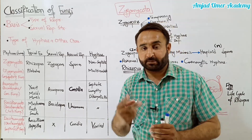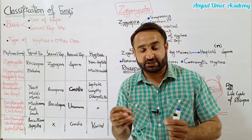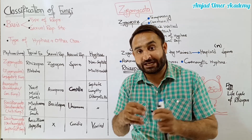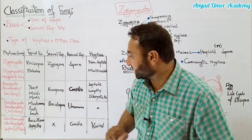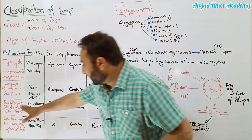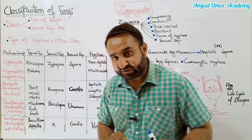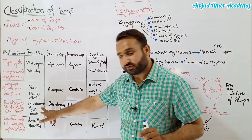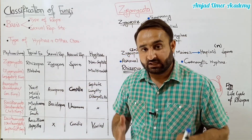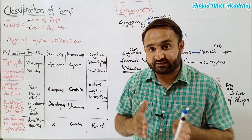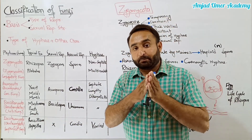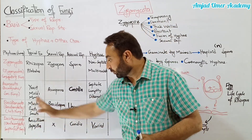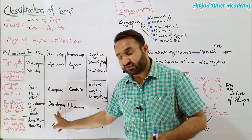Ascomycota mein septate hyphae hoti hain aur lengthy dikaryotic phase hota hai - yani har compartment mein do nuclei hote hain jo alike hote hain, yeh dikaryotic ya heterokaryotic phase kehlata hai. Basidiomycota - jo club fungi hain - mein mushrooms shamil hain, jo edible hote hain, aur notorious pathogens bhi hain jaise rusts aur smuts. In mein basidiospores hote hain jo sexual spores hain. In mein asexual spores uncommon hote hain, aur septate aur lengthy dikaryotic phase hota hai.